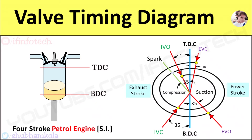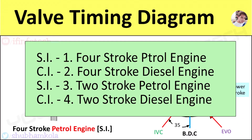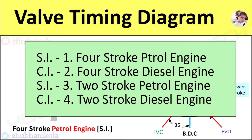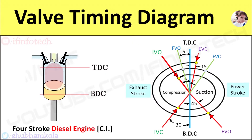Hi everyone, in this video we'll discuss the actual valve timing diagram for SI and CI engines. SI is spark ignition, which indicates use of spark to ignite the fuel and it is used in petrol engines, where CI is compression ignition, where air is compressed within the cylinder and the heat of this compressed air is used to ignite the fuel and it is used in diesel engines.